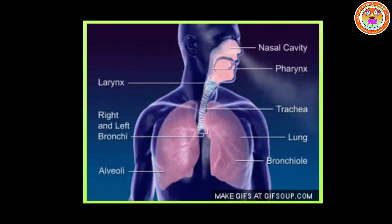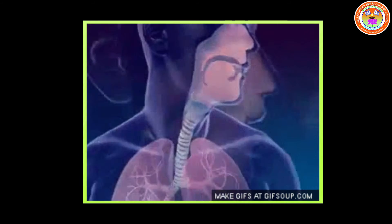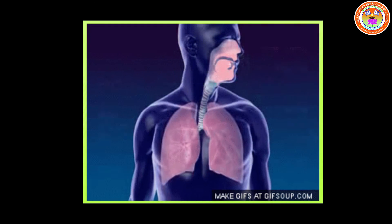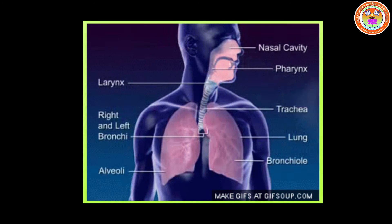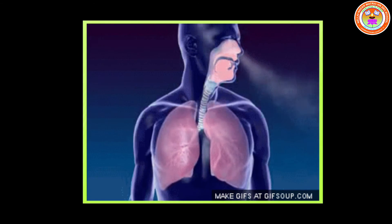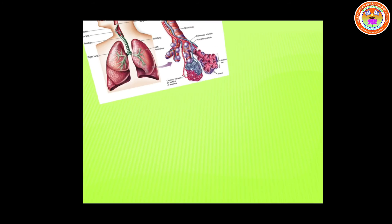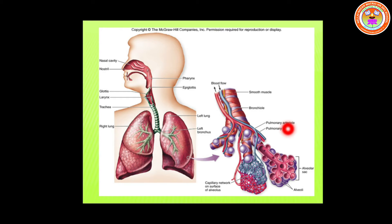Lungs are the main respiratory organ and they are located within the chest cavity. The trachea, commonly called the windpipe, is the tube supported by cartilaginous rings that connects the pharynx and larynx to the lungs, allowing the passage of air. The trachea divides into right and left bronchi and enters into the lungs. They divide further, ending in small air sacs called alveoli — here you can see those small tiny air sacs.